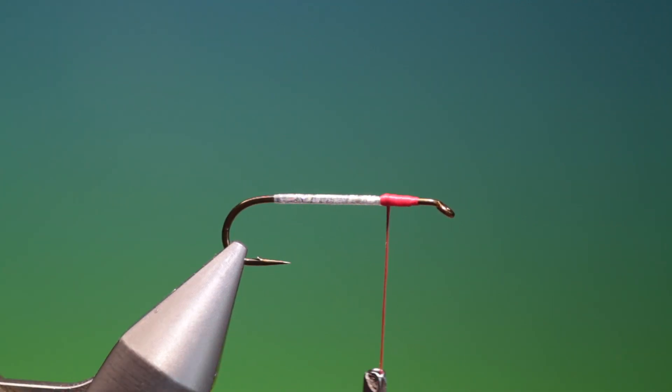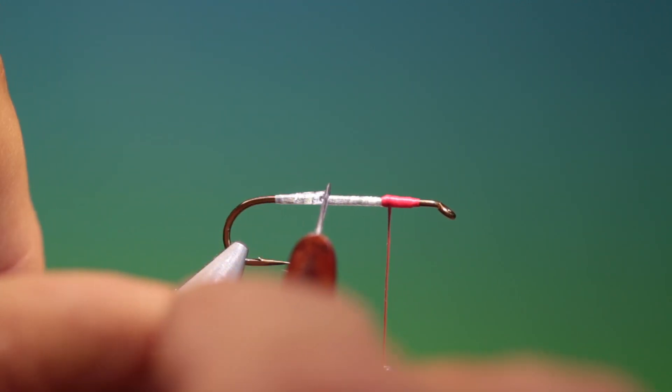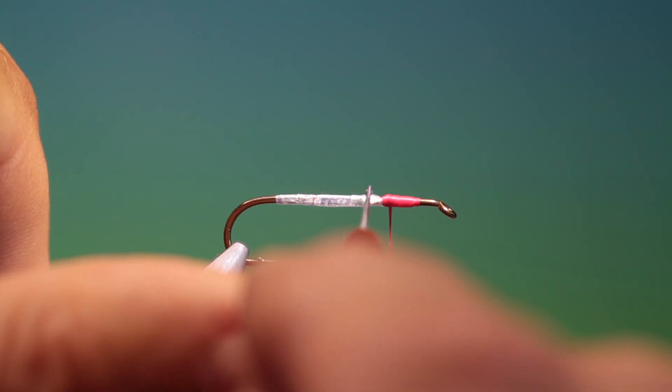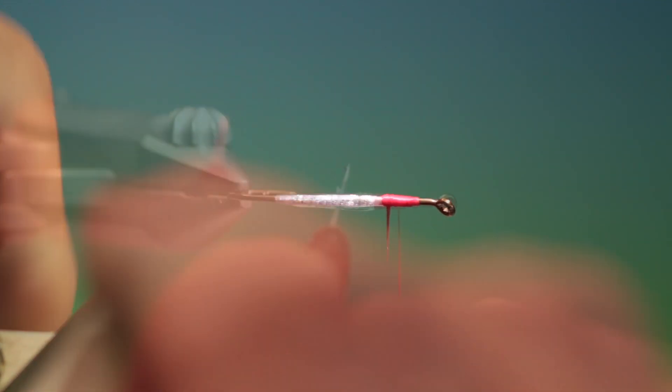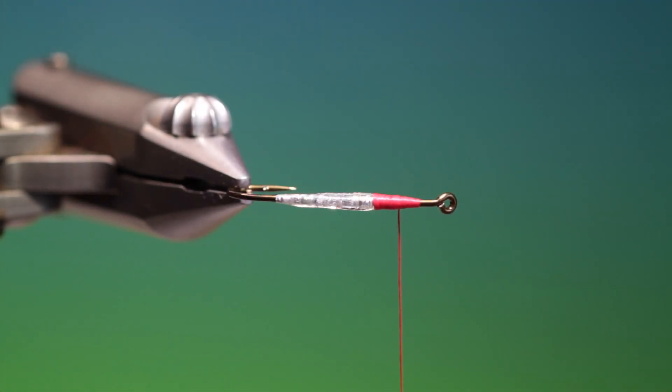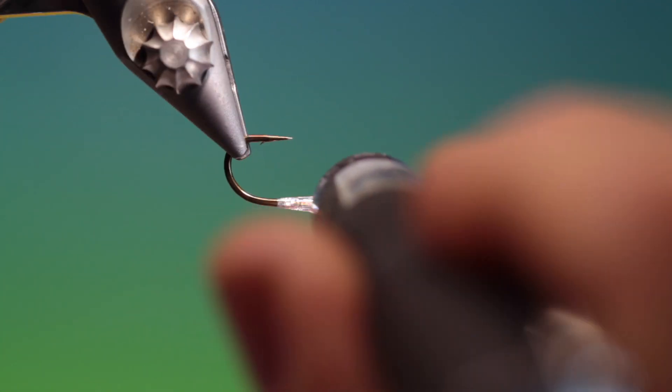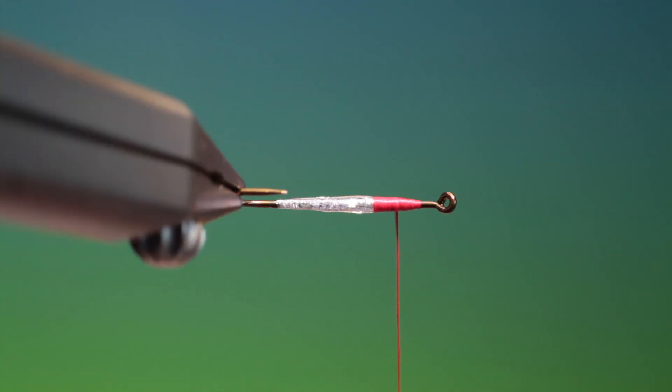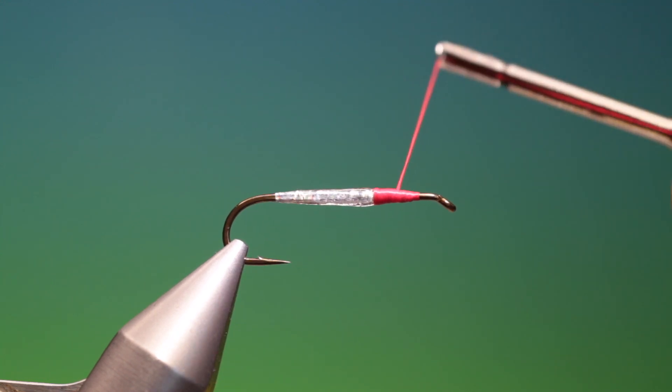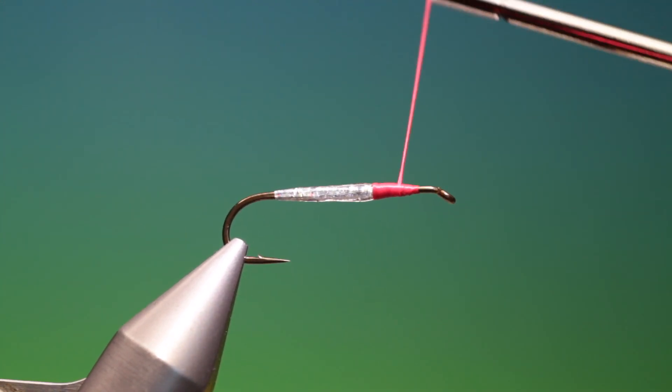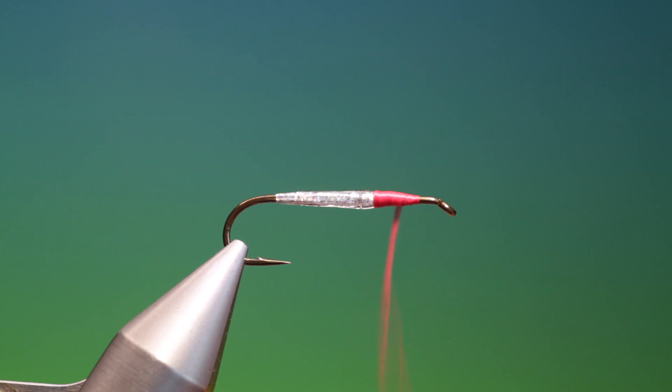Then we'll just give the body a little coat of UV resin. So once you've given that a coat and a blast. Then we can just get that out of the way. Then we can just build up this gill area. Flatten our thread again.